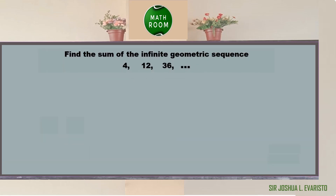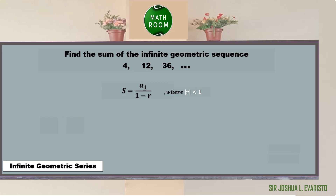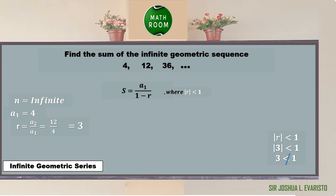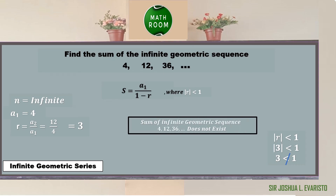Let's have another example. Find the sum of the infinite geometric sequence 4, 12, 36, and the pattern continues. This is also infinite geometric series, so we use s equals a sub 1 over (1 minus r). Here a sub 1 equals 4 and r equals 12 divided by 4 equals 3. However, since 3 is greater than 1, the condition that the absolute value of r must be less than 1 is not satisfied. Therefore, the sum of the infinite geometric sequence 4, 12, 36 does not exist.